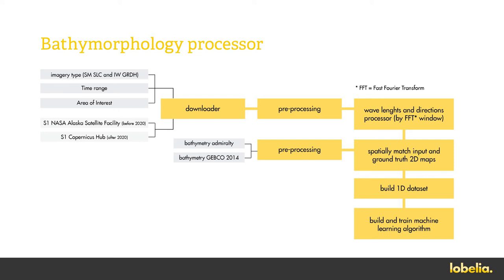The downloader module automatically downloads the available imagery by area of interest and period of time. Two imagery types have been studied: IW GRDH at 10 meters resolution with one image every six days, and SM SLC type at 4 meters resolution but less than one image per year. Pre-processing similar to the coastline processor was applied. Then, wavelength and direction from SAR imagery are computed by spatial window extracted from the image. These features are a good proxy to bathymetry for seafloors at a depth from 15 to 70 meters in shallow waters.